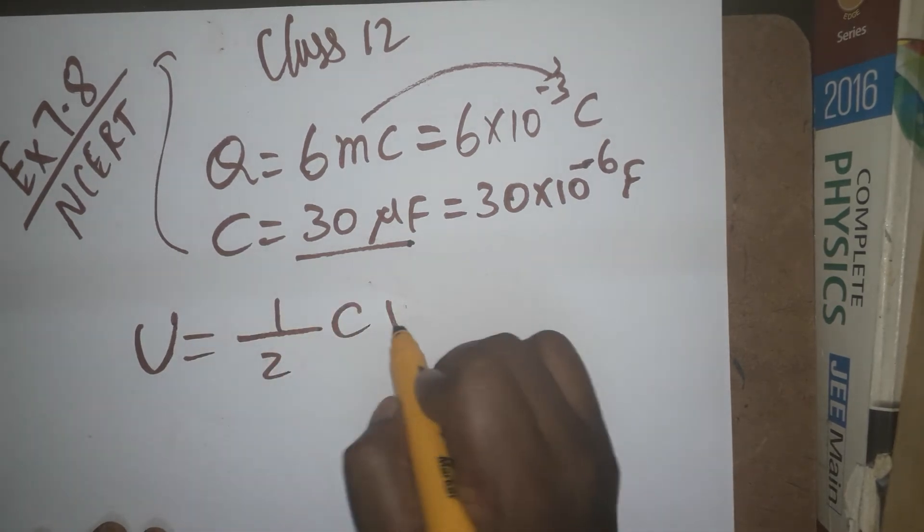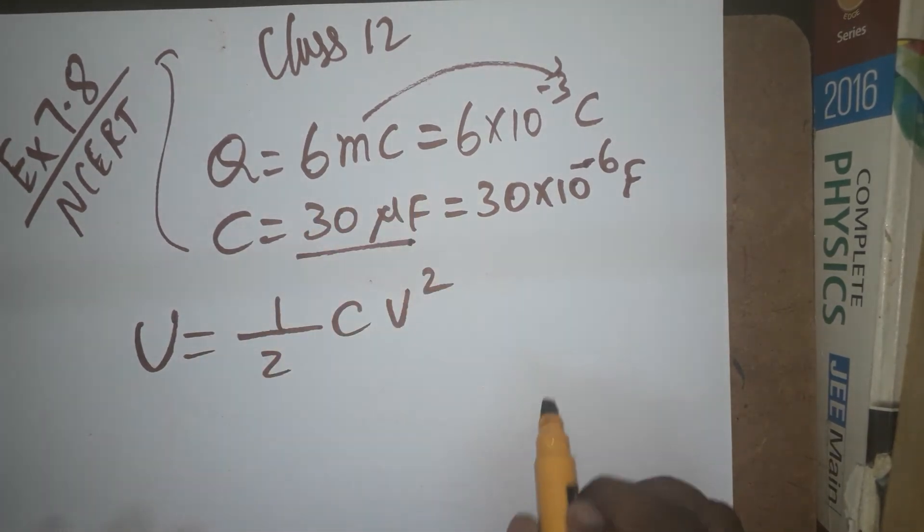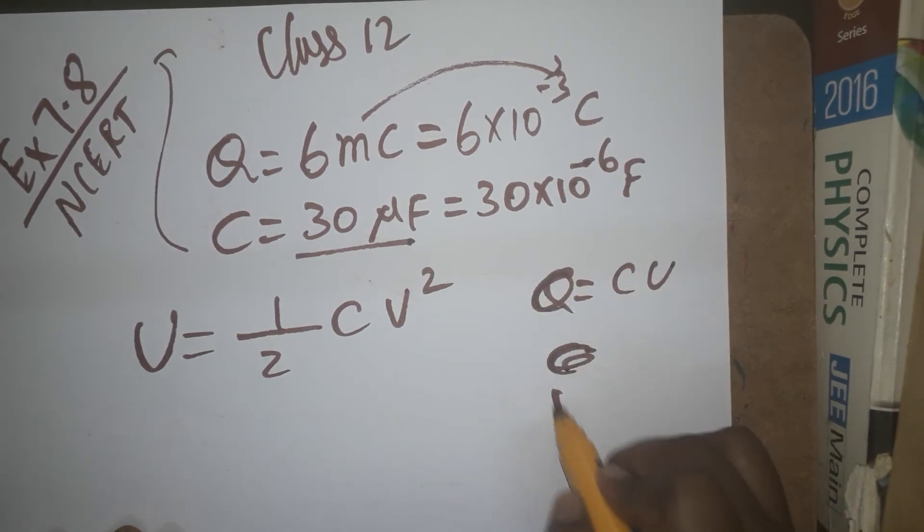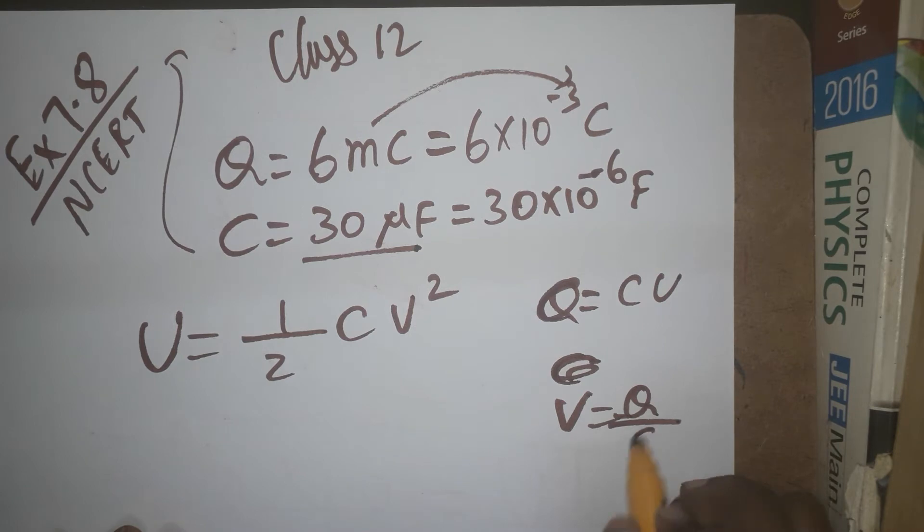The energy stored in a capacitor is U = 1/2 CV². Actually V is not given in the question. We know Q = CV, so V = Q/C.